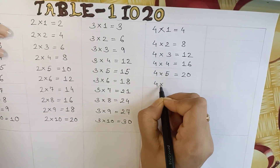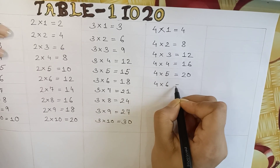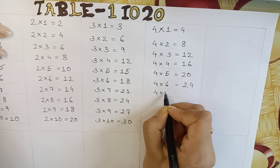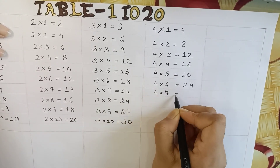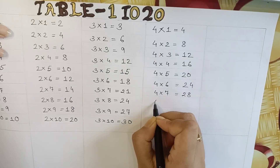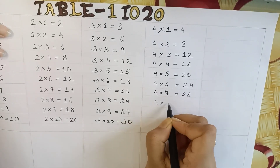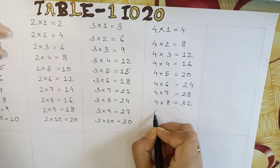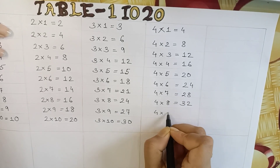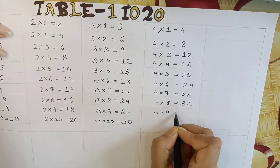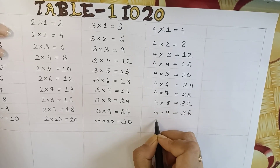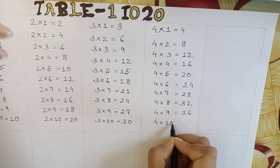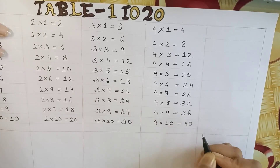4 x 6 is equal to 24. 4 x 7 is equal to 28. 4 x 8 is equal to 32. 4 x 9 is equal to 36. 4 x 10 is equal to 40.